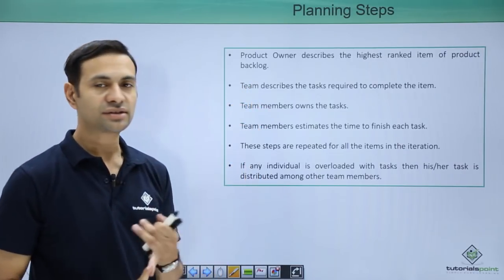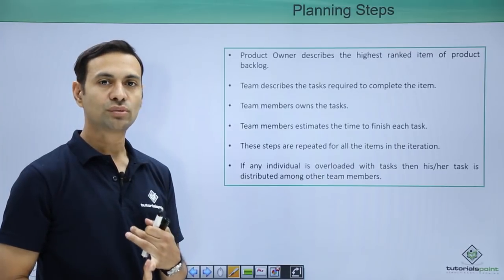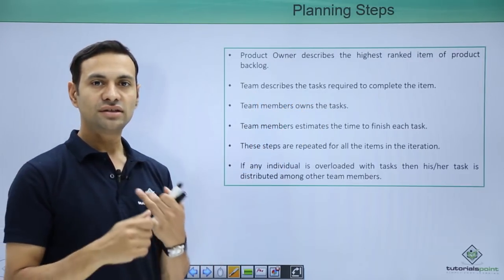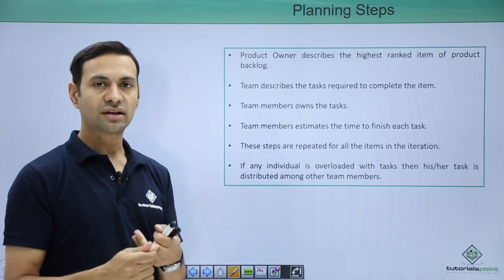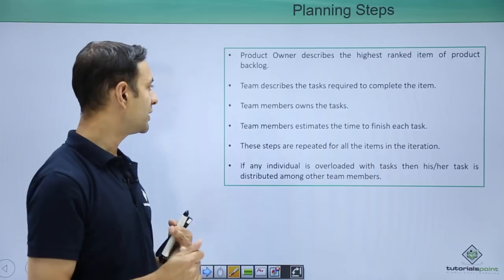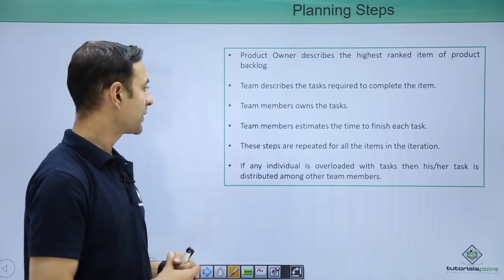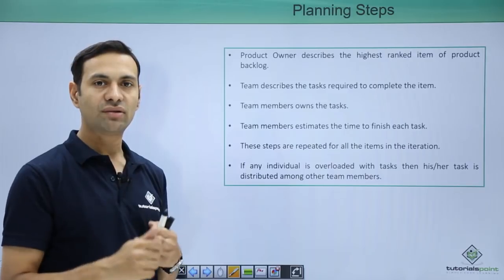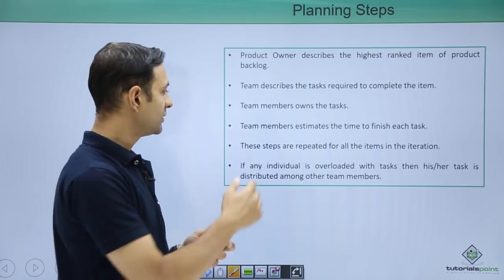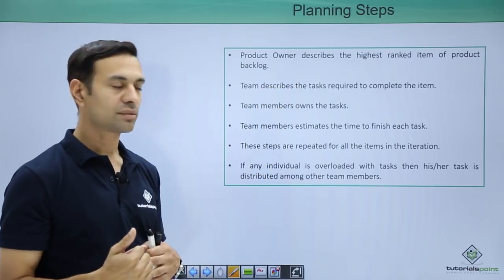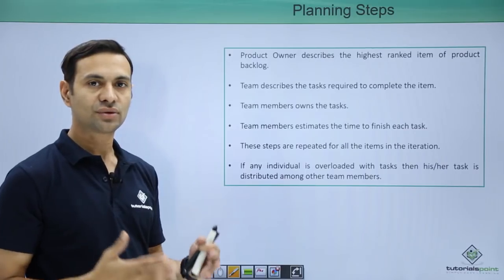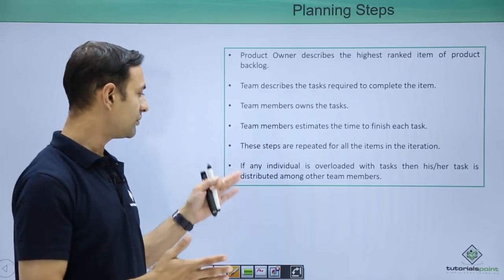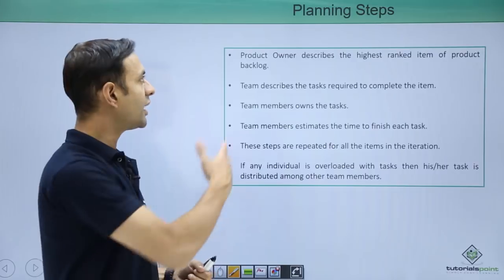Planning steps: the product owner first describes the highest-ranked item of the product backlog. The team then describes the tasks, dependencies, and technical feasibility of the user story. Team members own these tasks and estimate the time to finish each one. Once a feature is done, the next feature is taken up and these steps are repeated for every item in the iteration. If any individual is overloaded with tasks, the tasks are distributed among other team members.